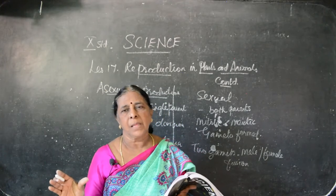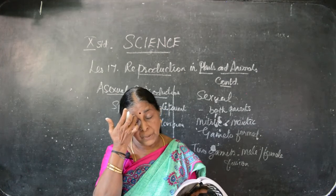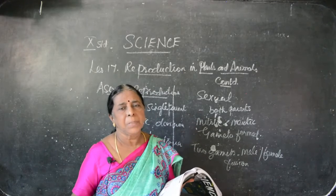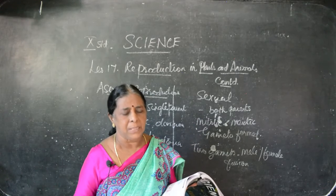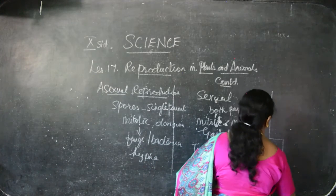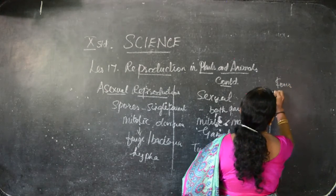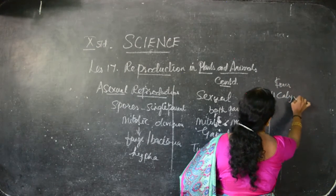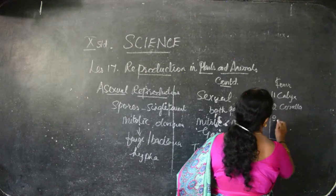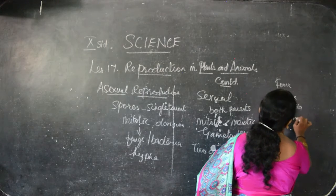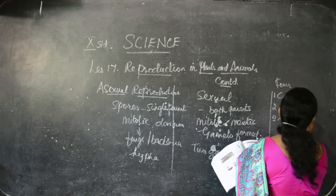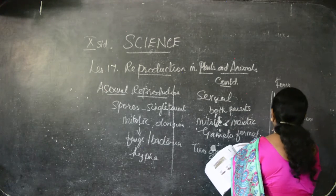For example, consider a flower — we are seeing plant reproduction only. From the flower only we get seeds, and from seeds we get fruits. In the flower we have four parts, four whorls. What are the four? One is calyx, the other one is corolla, the third one is androecium, and the fourth one is gynoecium.